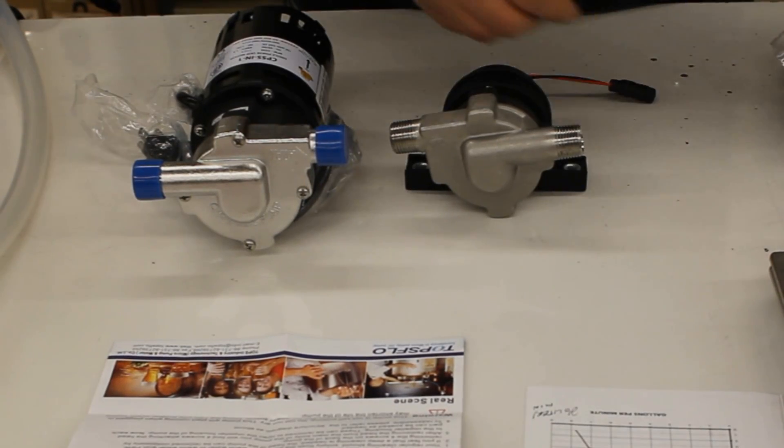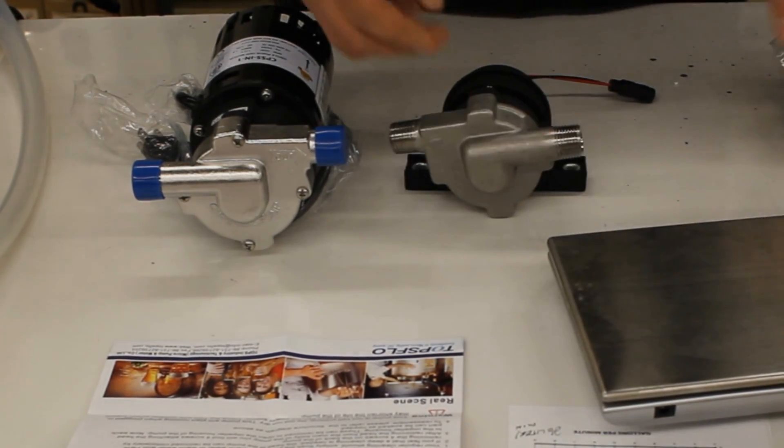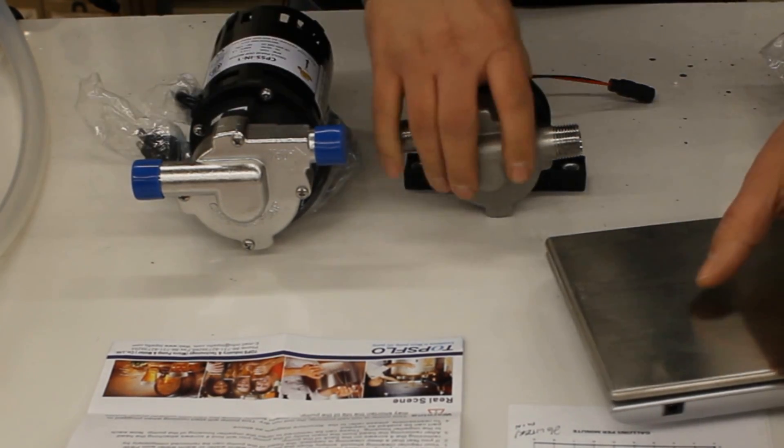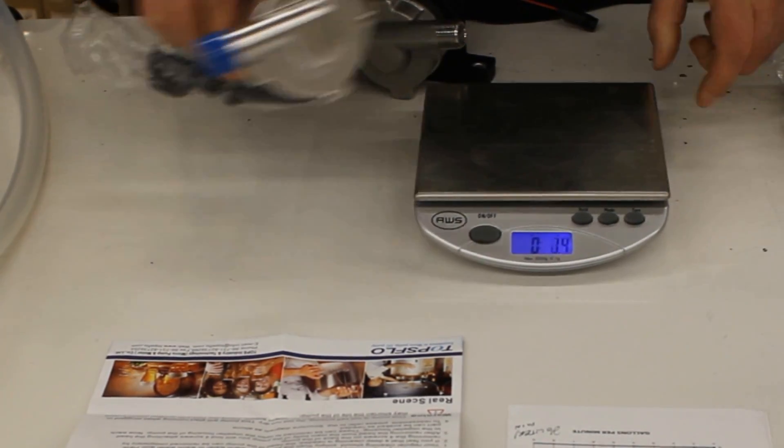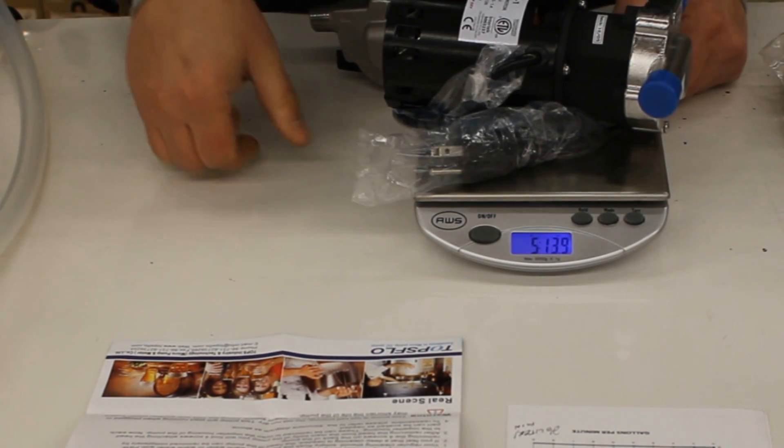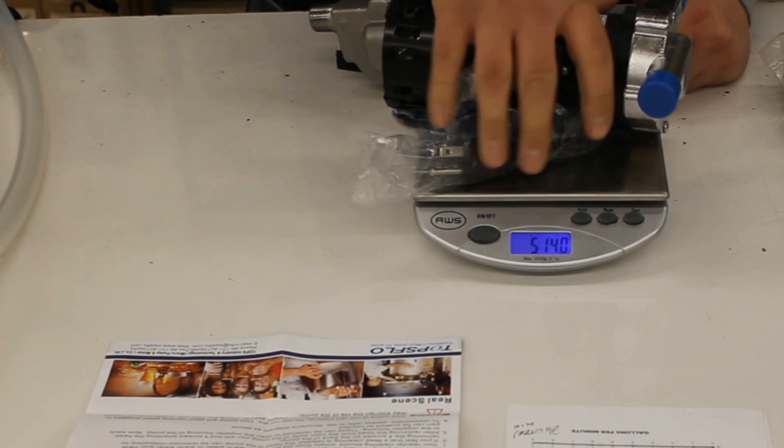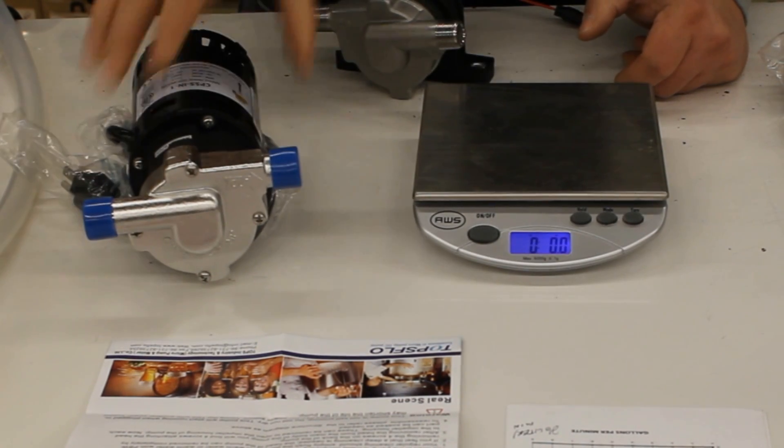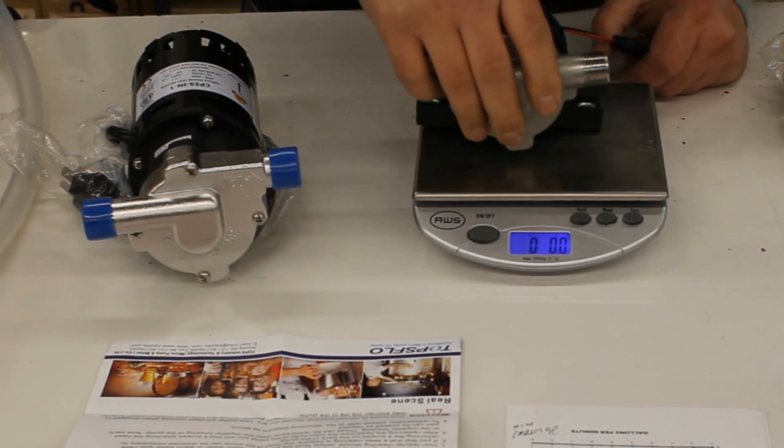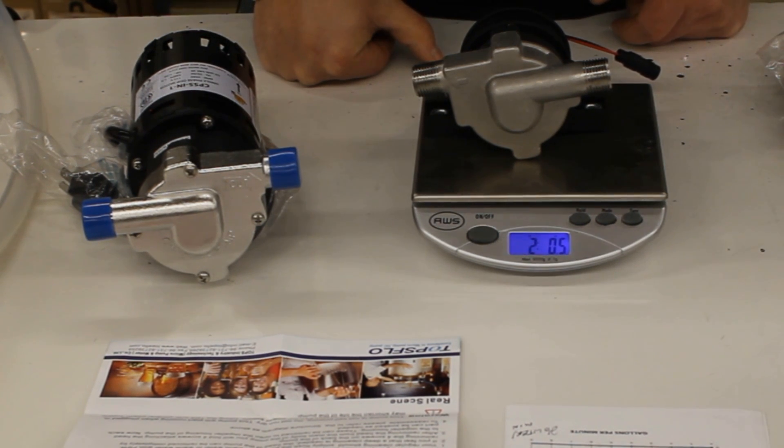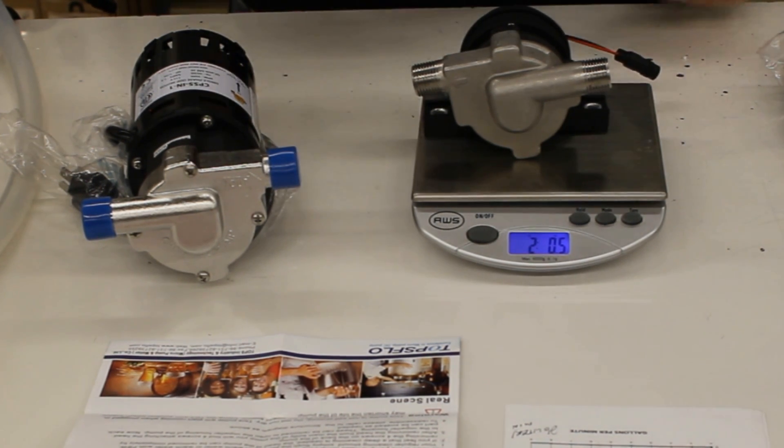Let's talk about the weight a little bit. I'm not sure if it matters all that much, but I'll show you an application where it actually may matter. The Chugger pump weighs five pounds 14 ounces, so just under six pounds. The TopsFlo 24-volt DC TD5 is two pounds 0.5 ounces, so I'll just round that down to two pounds. It's about a third of the weight.